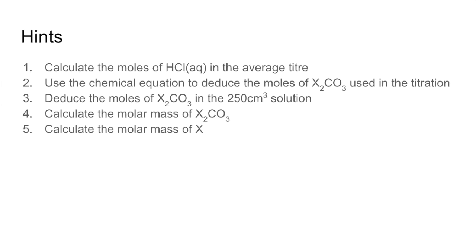Okay, so the hints. There's five things really that you need to do, five steps essentially. You need to calculate the moles of HCl in that average titre. Then use the chemical equation to deduce the moles of X₂CO₃ used in the titration.